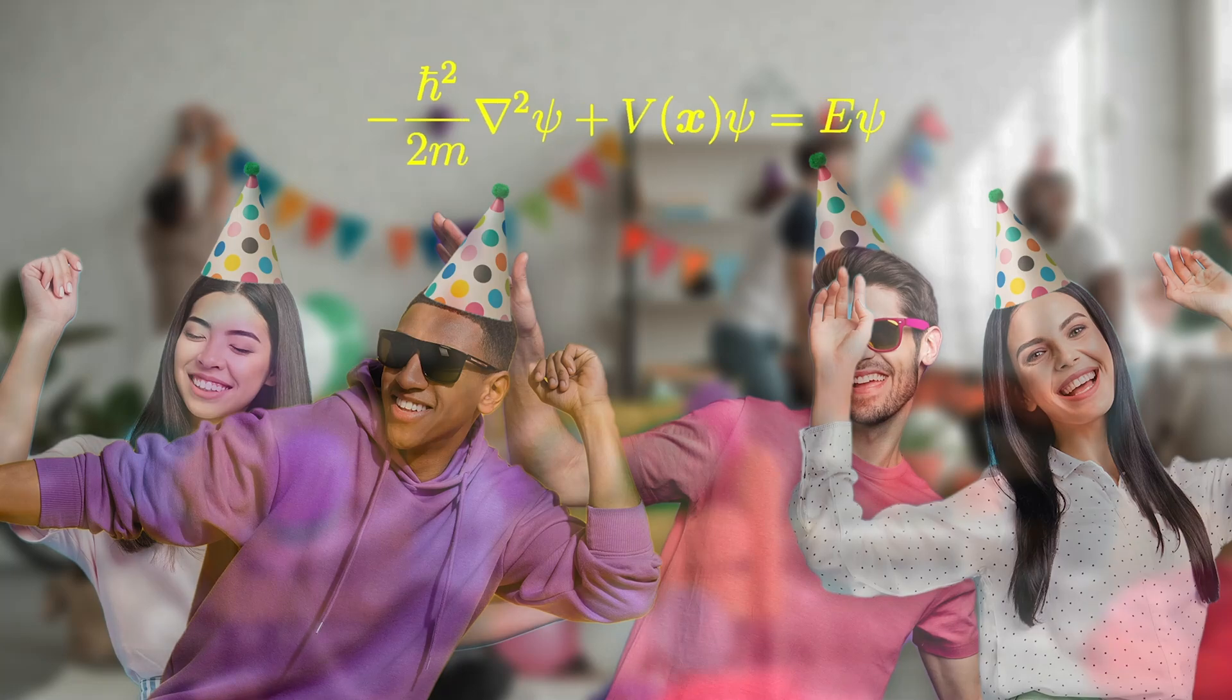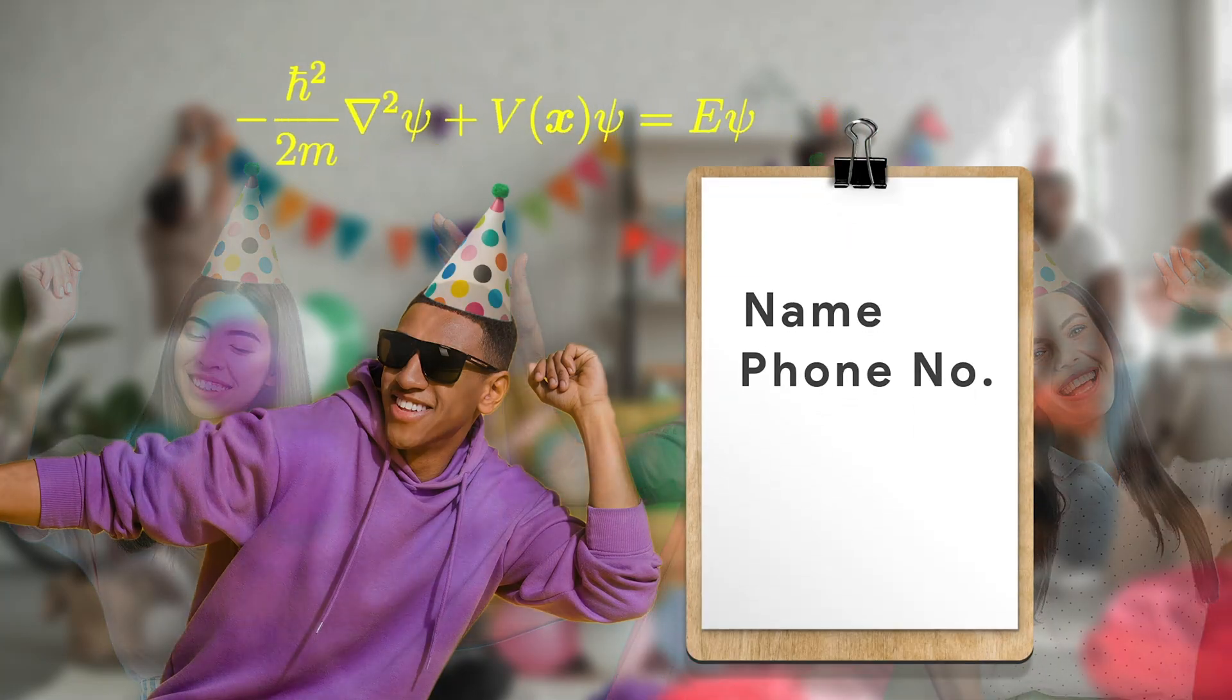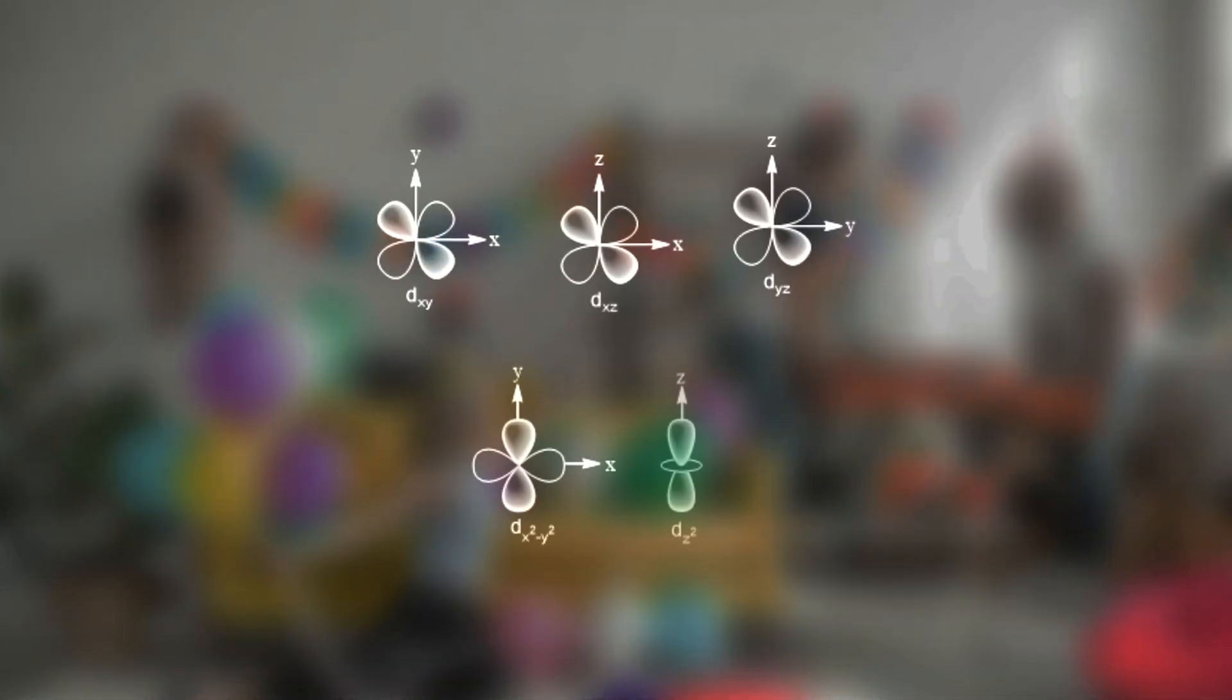To understand this equation better, imagine this: you are at a party. The Schrödinger's equation is like the guest list. Each guest has a unique ID, like the name, the phone number, the address. These are also like the quantum numbers that are used to describe the electron state.